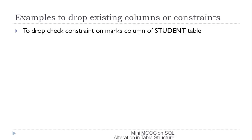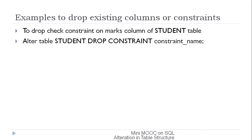To remove a check constraint on the marks column of the student table, we must specify the constraint name using: ALTER TABLE table_name DROP CONSTRAINT constraint_name. Normally we don't know the constraint name if it was assigned automatically by Oracle. To find it, we query the USER_CONSTRAINTS table.